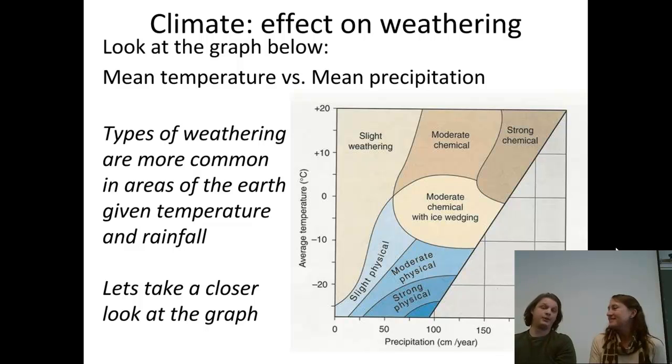I love graphs. Yeah, I do too. All right, let's see what this one's telling us. If we take a look at the graph itself, we've got a bunch of different colors there. On the y-axis, we have temperature, and then on the x-axis, we have precipitation. And certain types of weathering happen in certain climates.